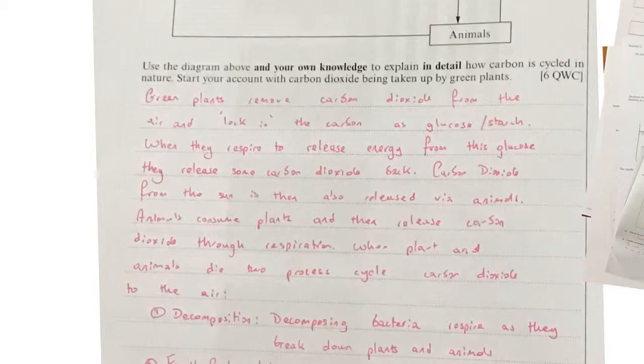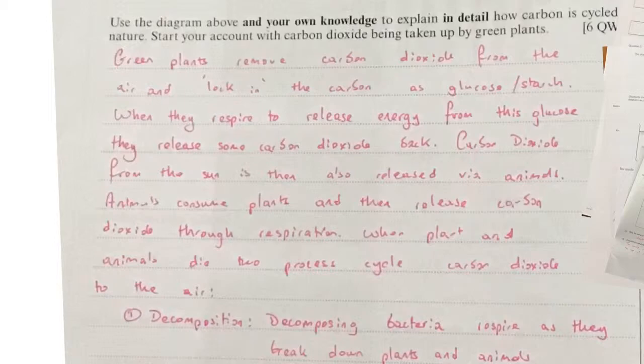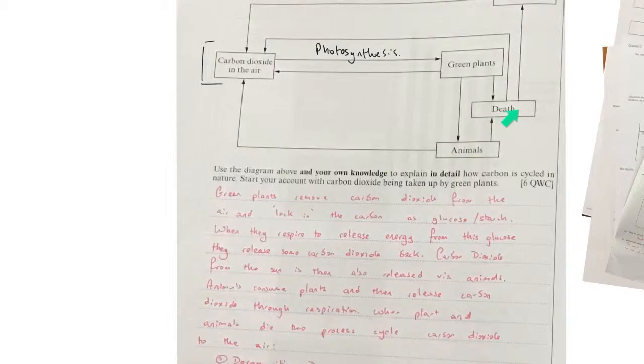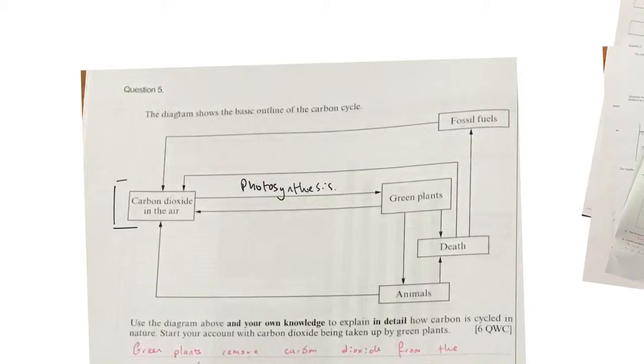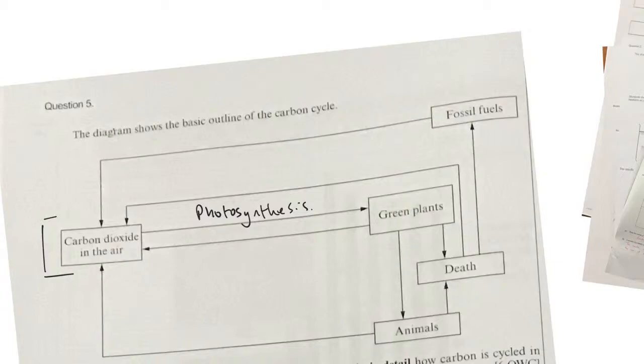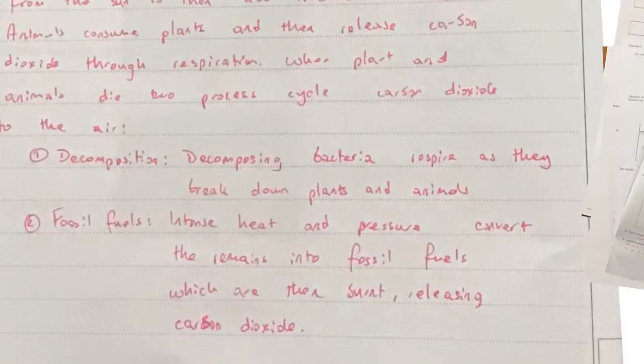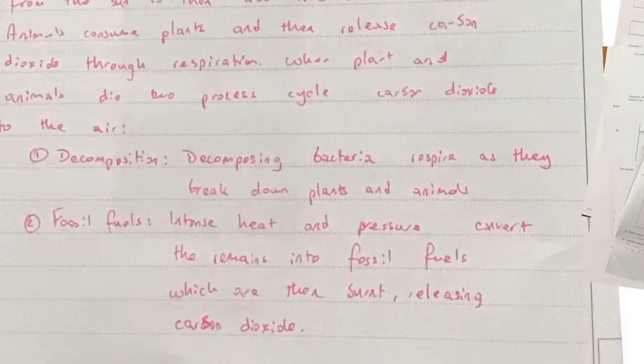Carbon is also released via animals, which consume the plants, and then animals release carbon dioxide through their own respiration. When plants and animals die, there are two pathways: decomposition, or fossil fuel formation through intense pressure and heat. Decomposing bacteria respire as they break down plants and animals, releasing carbon dioxide. The intense heat and pressure convert remains into fossil fuels such as oil and coal, which are then burned, releasing carbon dioxide back into the air.